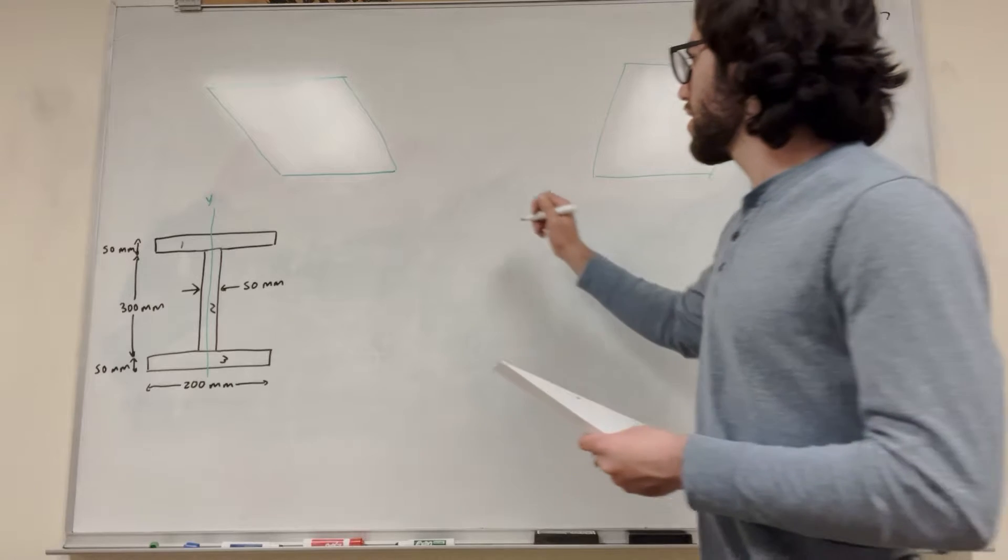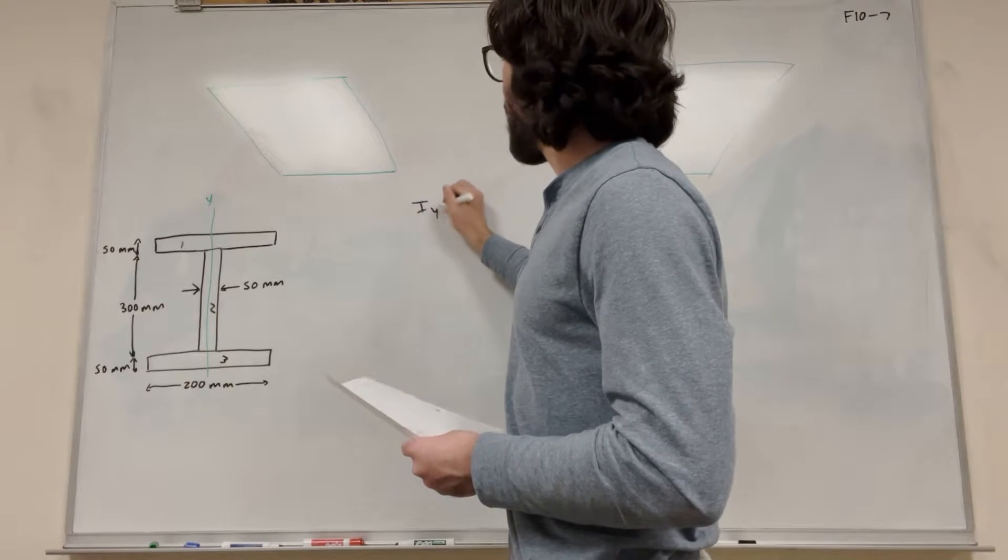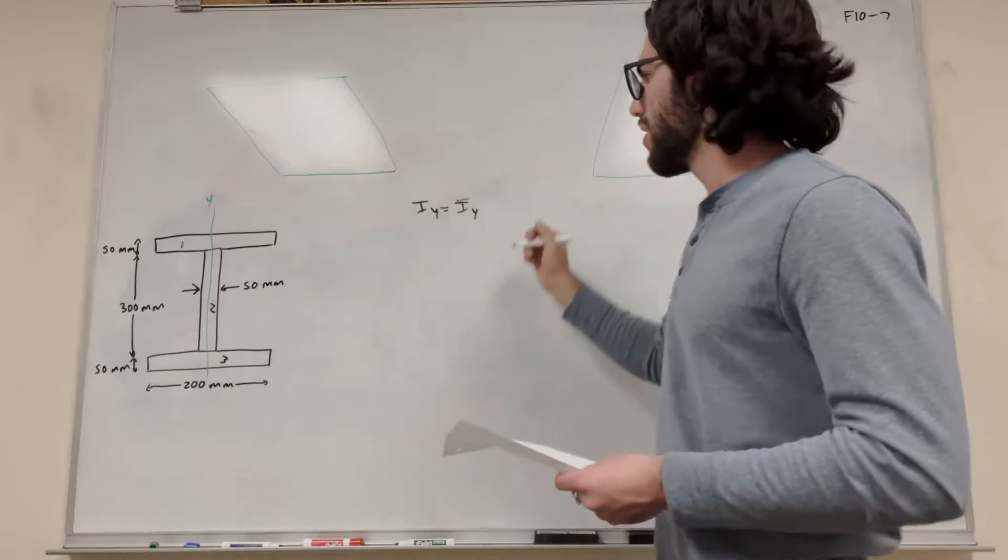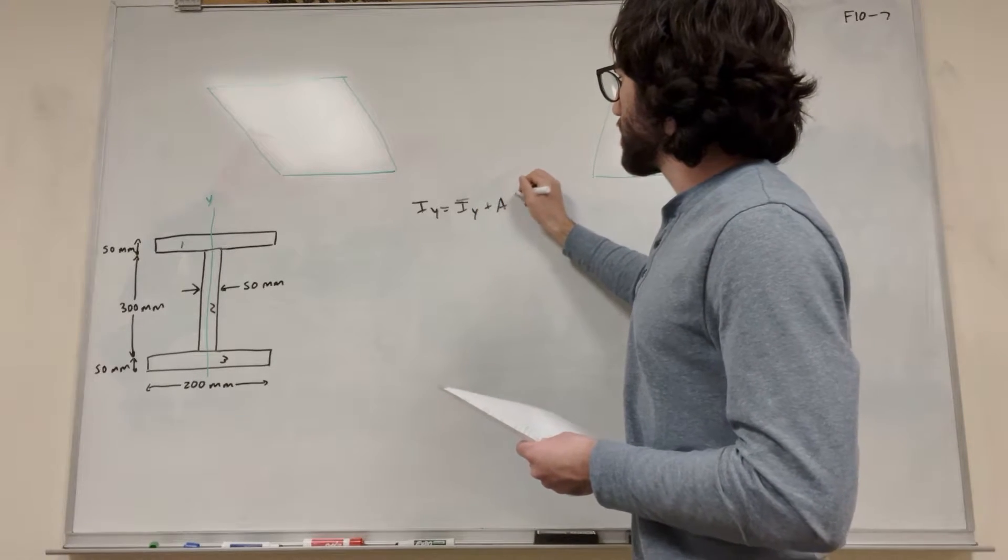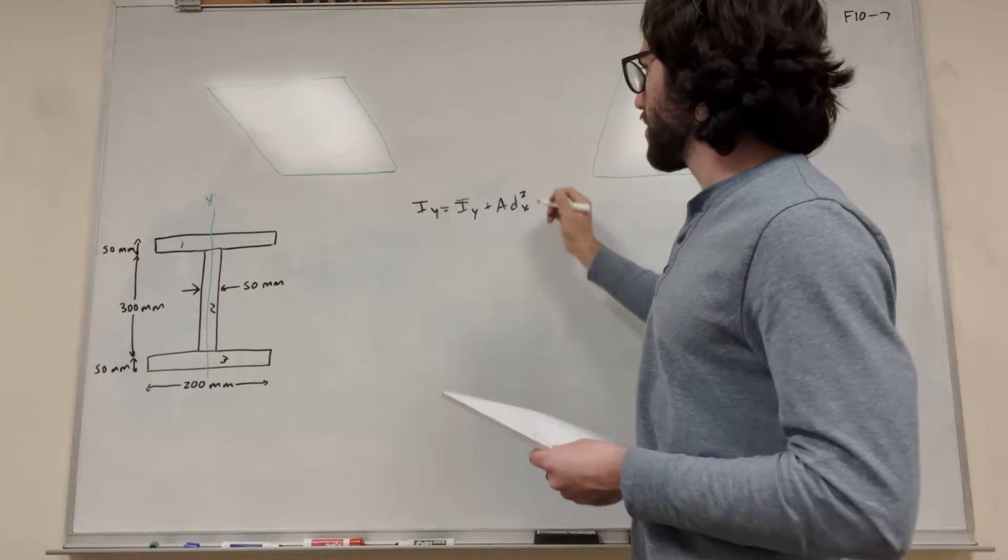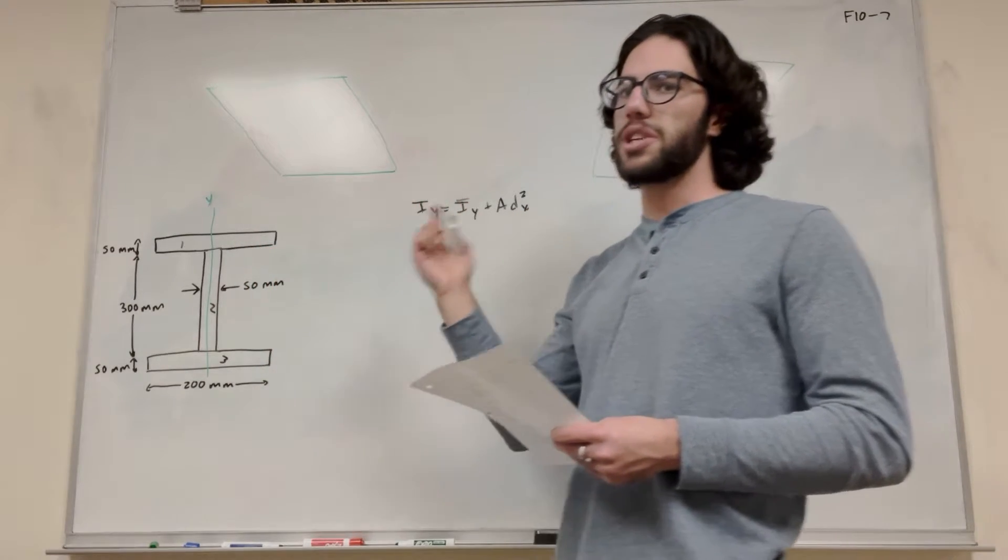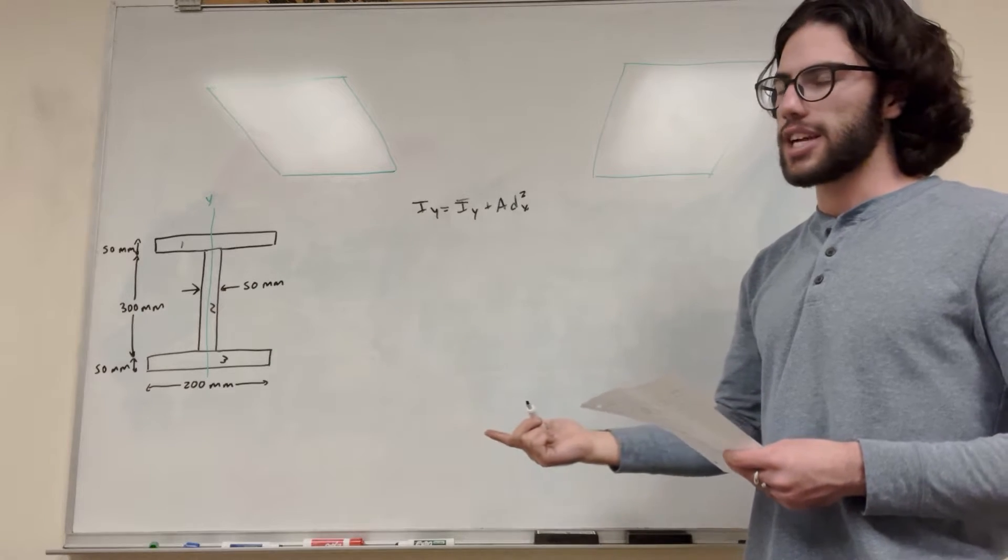The equation we're going to be using is the moment of inertia around the y-axis is equal to the moment of inertia around the y-bar of the shape, plus area times distance x-squared. So distance x-squared is the distance from the axis that we're rotating around to the center of mass of that shape.